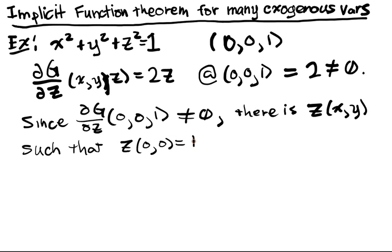And then we have that x squared plus y squared plus z of x, y squared is always equal to 1.